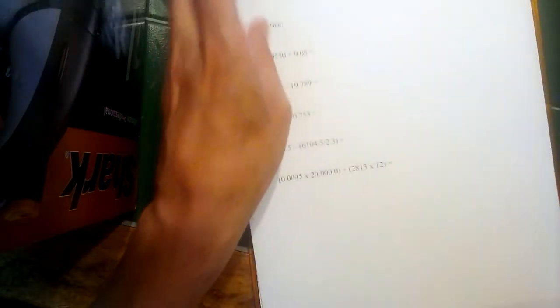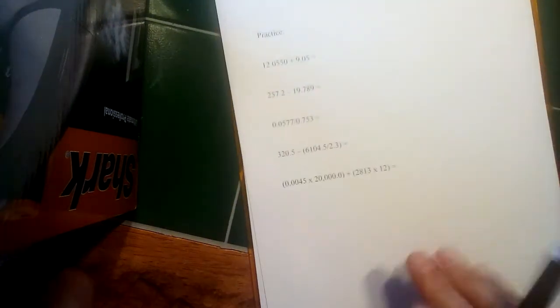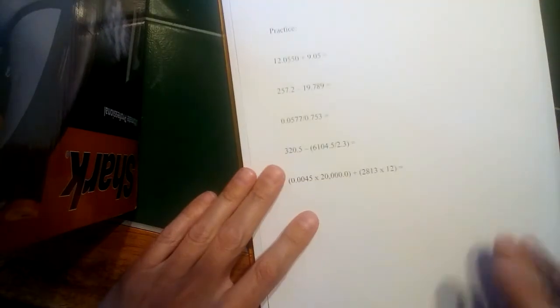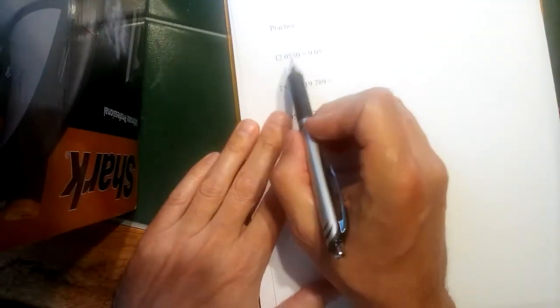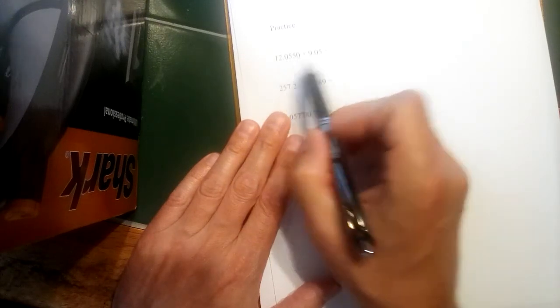Let's look at a few examples here. So the first one here on the next page is an addition. And we said addition is limited by place. So the first piece of data here, 12.0550, that goes four places past the decimal. But the second one goes two places past the decimal.